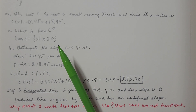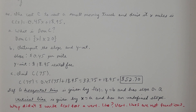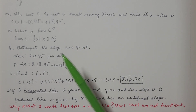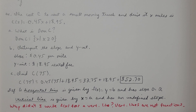If we just had the line y equals 0.45x plus 18.95 in isolation, the domain would be all real numbers. But since this line relates to a story problem, we have a restricted domain — x can't be negative, that doesn't make sense. For part b, we want to interpret the slope and y-intercept. The slope is 0.45 and the y-intercept is 18.95.